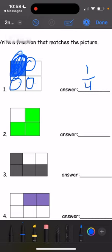Same thing for number 2. How many boxes are there in total? We have 1, 2, 3, 4 boxes in total. So same. We're going to put the 4 on the bottom. And how many boxes are colored in? 1, 2, 3. There are 3 green boxes, so this is 3 out of 4.